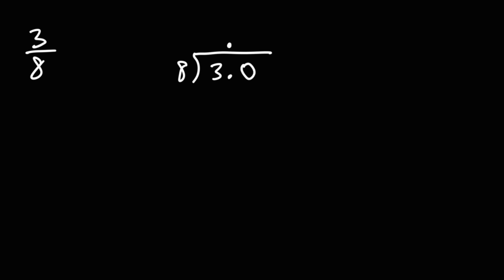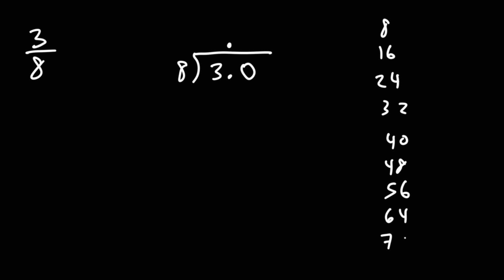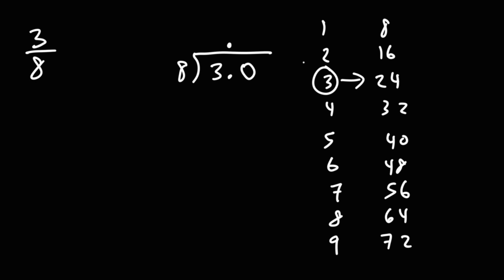How many times does 8 go into 30? If we write out the multiples of 8, we have 8, 16, 24, 32, 40, 48, 56, 64, 72. What is the highest multiple of 8 just under 30? That's going to be 24. So 8 goes into 30 3 times.